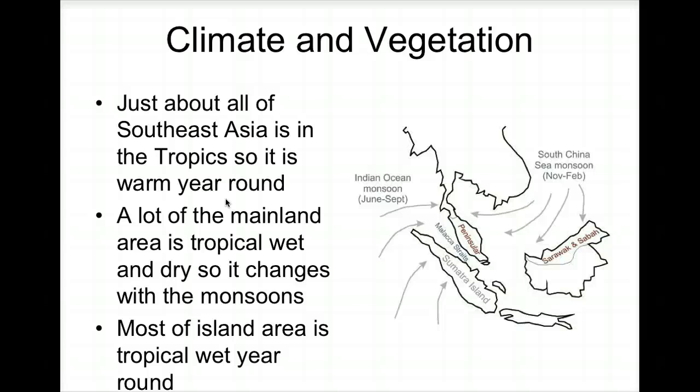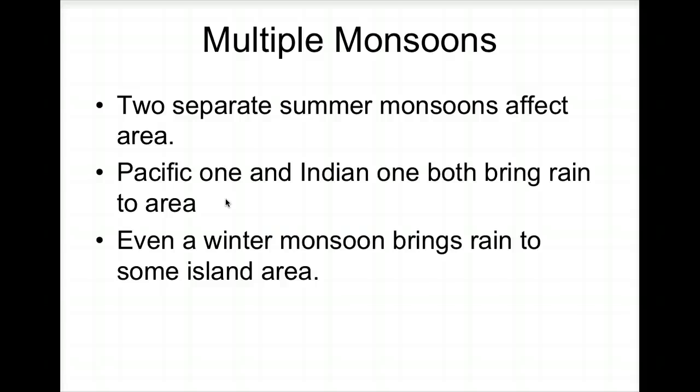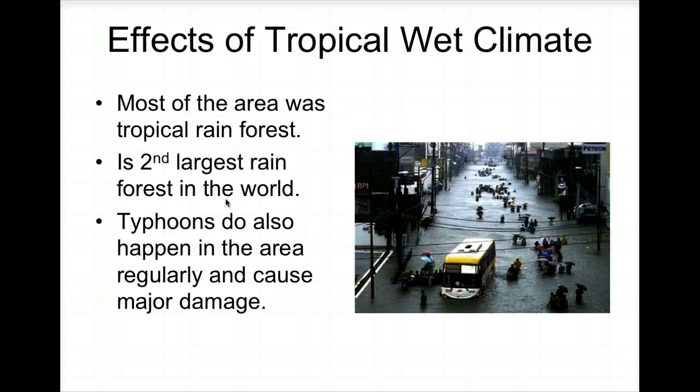In terms of climate and vegetation, just about all of Southeast Asia is in the tropics, so it's warm all year round. The mainland area has tropical wet and dry seasons depending on the monsoons, while most island areas are tropical all year round. There are two different monsoons — a Pacific one and an Indian one — both bring rain, and there's even a winter monsoon that brings rain to some island areas.